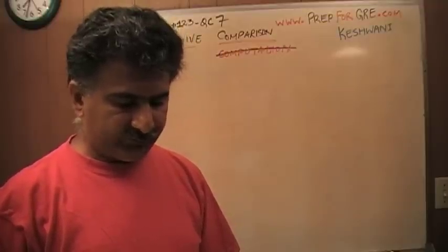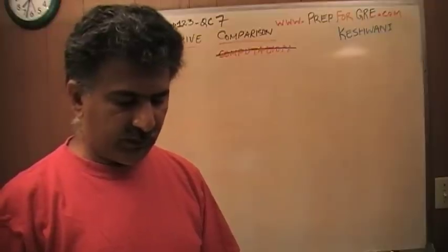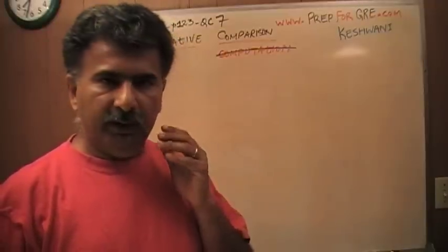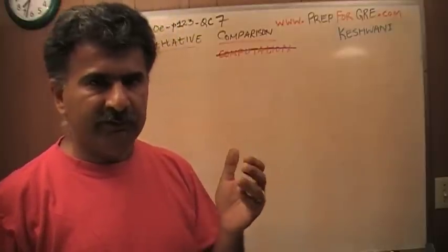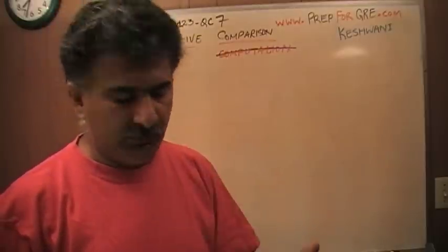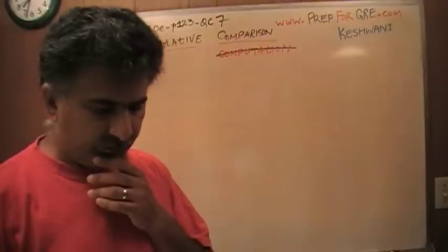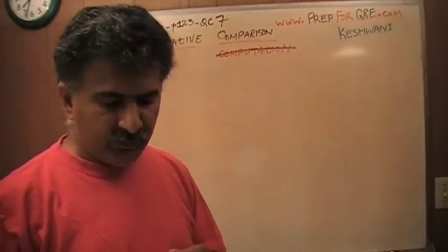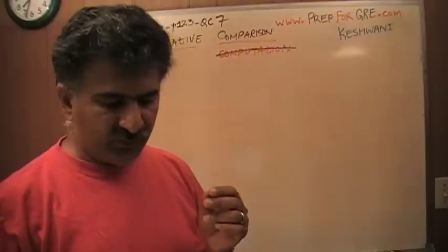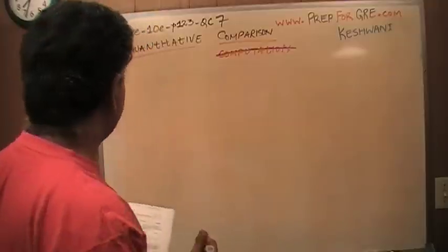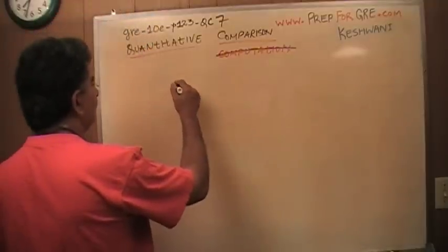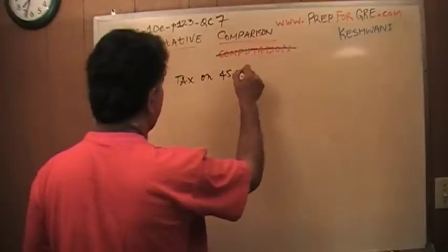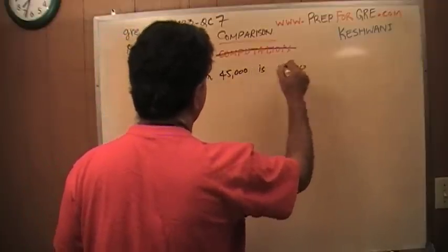It says, for each home in town X, the amount of property tax is P% of the value of the home. So in a given town, the amount of property tax that they collect is a certain percentage of the value of the home. This is a startling concept, mind boggling. Let's carry on then. The property tax on a home whose value is 45,000 is 1,200. There you go. Now we're getting into the nitty-gritty. So tax on 45,000 we are told is 1,200.